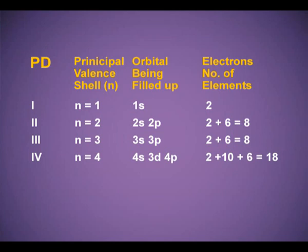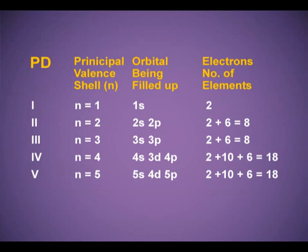Period 4: n = 4; orbitals to be filled are 4s, 3d, and 4p — 2 electrons in s, 10 in 3d, and 6 in p; 18 total, so 18 elements. Period 5: n = 5; orbitals 5s, 4d, and 5p — again 18 electrons and 18 elements. Period 6: n = 6; orbitals 6s, 4f, 5d, and 6p — s accommodates 2, f accommodates 14, d has 10, and p has 6; 32 total, so 32 elements.